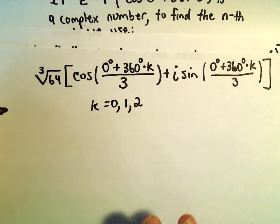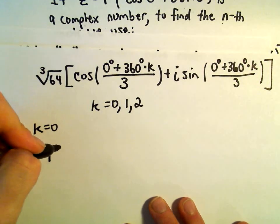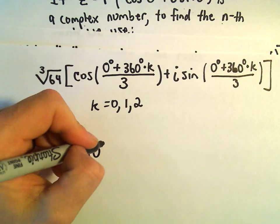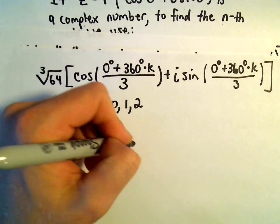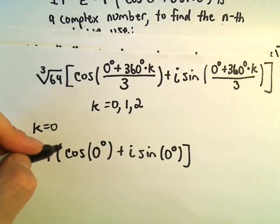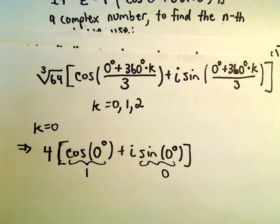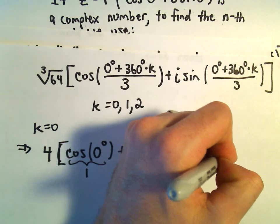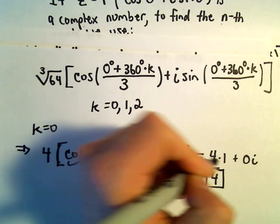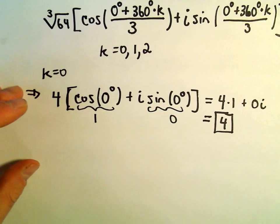Alright, so if we use k equals 0, the cube root of 64 is going to be 4. If we plug in k equals 0, well, we would just be left with 0 in the numerator. So we would get cosine of 0 degrees plus i sine of 0 degrees. And cosine of 0, that's 1. Sine of 0 is 0, so really you're left with 4 times 1, plus 0 times i would be 0, so we would have 0i. And we're simply left with the number 4. And that makes sense. Because 4 is a complex number, and it's definitely a cube root of 64. So probably could have done that one without all this hard work.